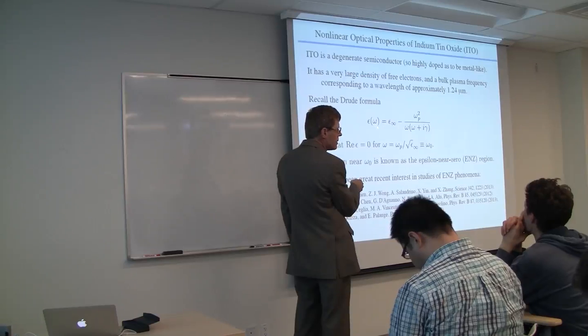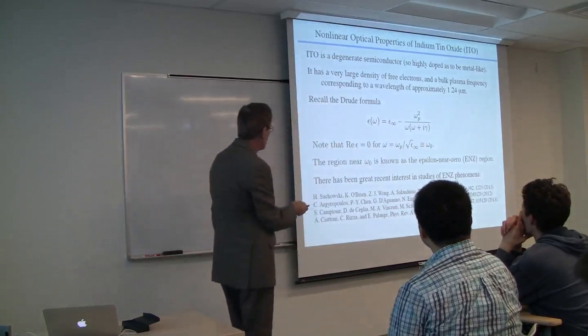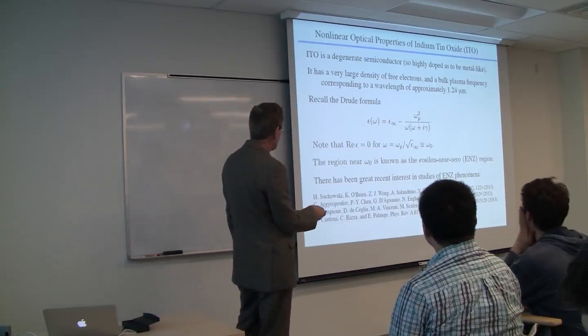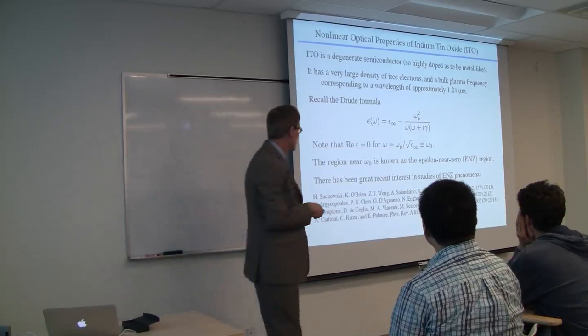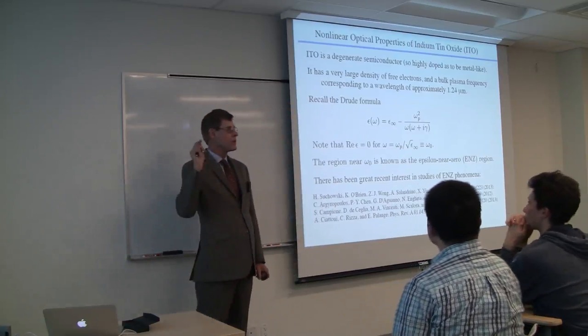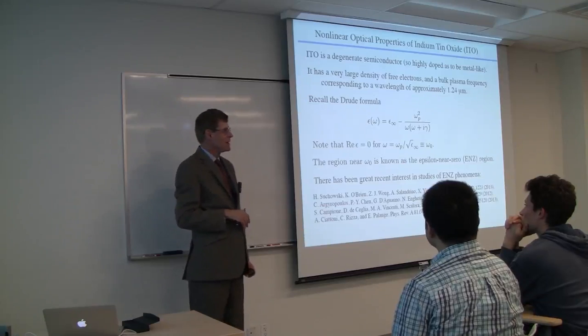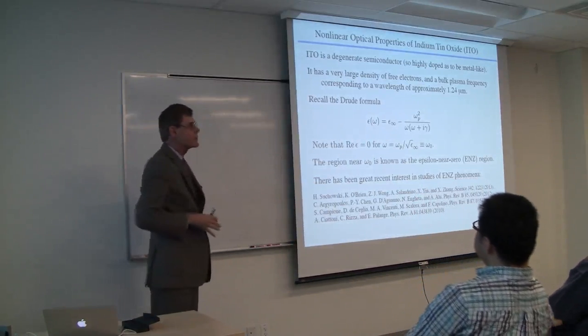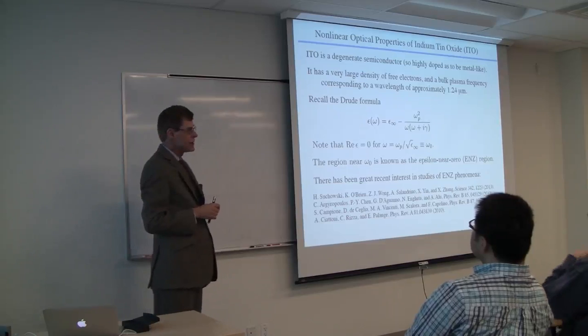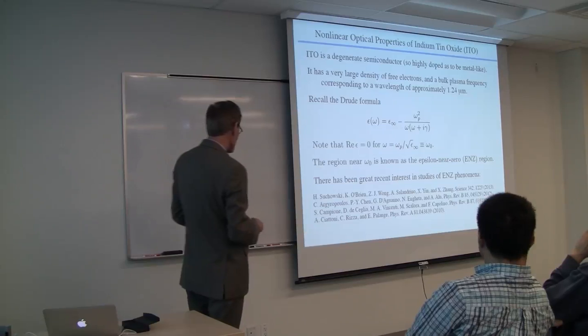Here is the standard Drude formula for the dielectric function of a metal. If you look at this equation, you will see that the real part of epsilon vanishes at a frequency equal to the plasma frequency divided by the square root of epsilon infinity. For a plasma in condensed matter, this is the background dielectric constant. The region near omega naught is known as the epsilon near zero region.